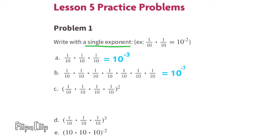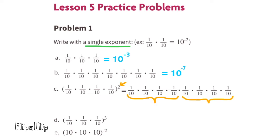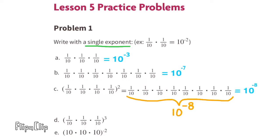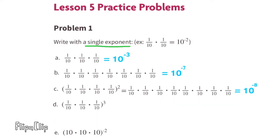Part C: Inside the parentheses we have 1/10 times itself four different times. Outside the parentheses we have to the power of 2, so we need two sets of 1/10 times itself four times — a total of eight times. Written as a single exponent, that would be 10 to the power of negative 8.